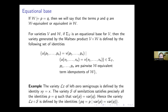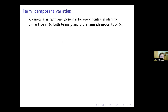Now another definition: I will call a variety V term idempotent if for every non-trivial identity P equals Q true in V — where non-trivial means P and Q are different terms — both terms P and Q are term idempotents of V. So in V, the non-trivial identities are only between term idempotents. Then we call V a term idempotent variety.